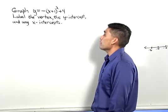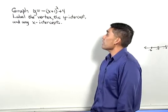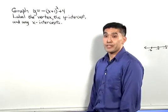Graph y equals negative the quantity x plus 1 squared plus 4, and label the vertex, the y-intercept, and any x-intercepts.